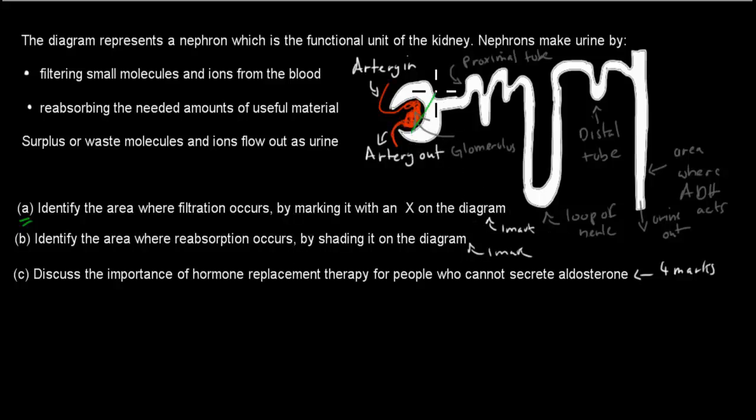All we have to do is know where filtration occurs and mark it with an X. In this case, filtration occurs exactly here, which is where the high pressure blood goes through the Bowman's capsule, which was this part here. All the small ions and dissolved material pass through and go into Bowman's capsule and then into the nephron itself. So filtration occurs here.